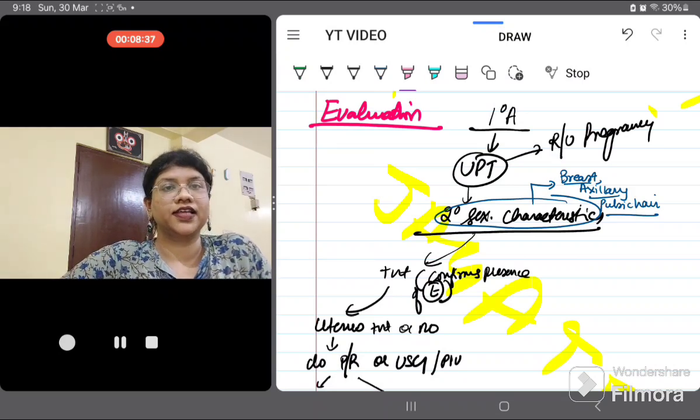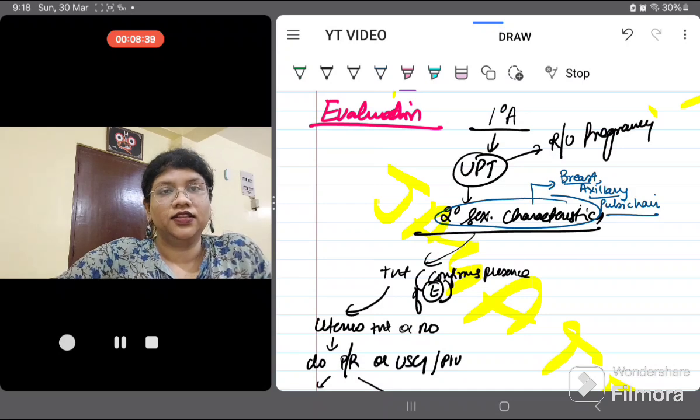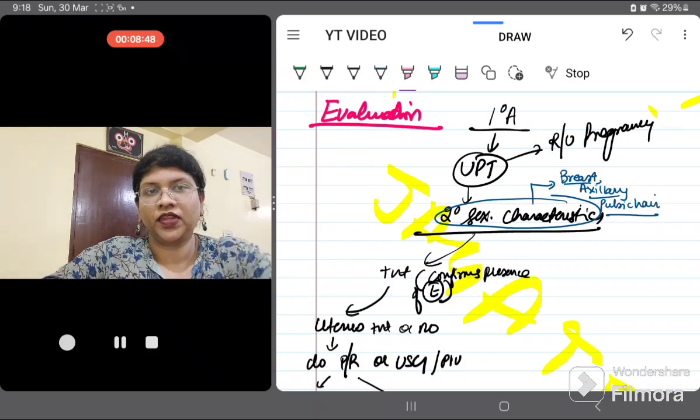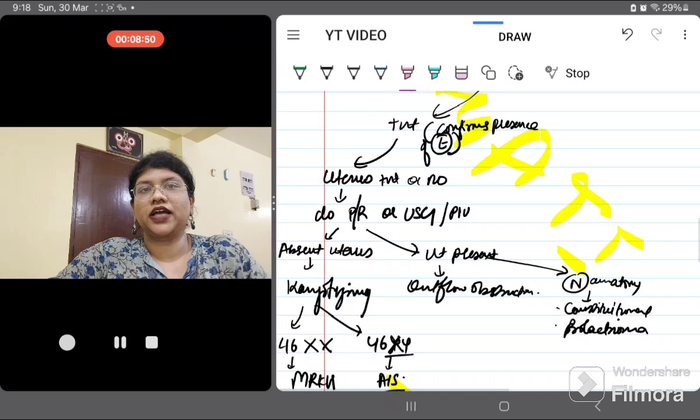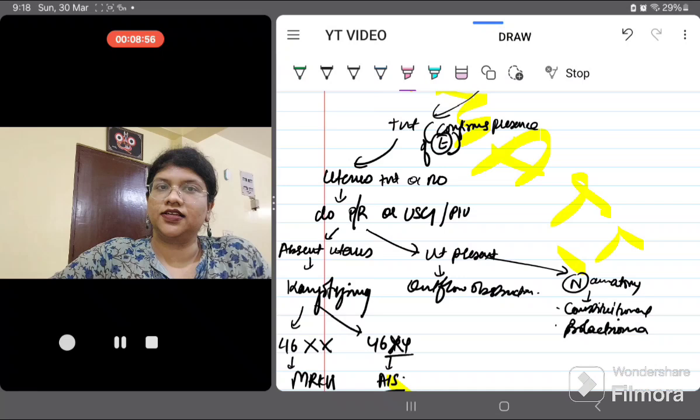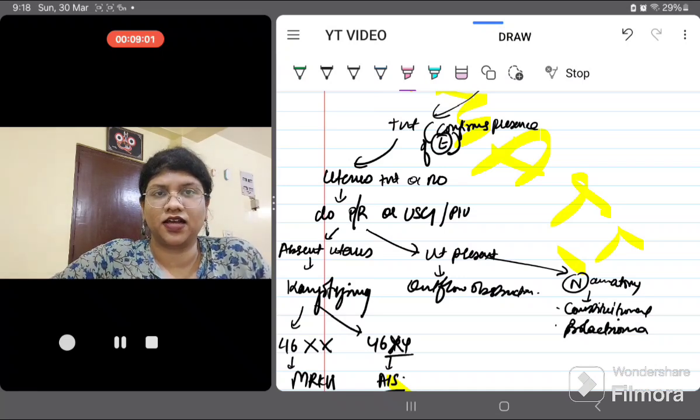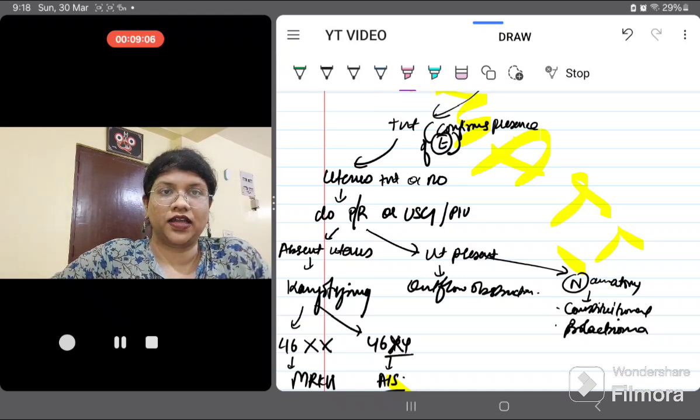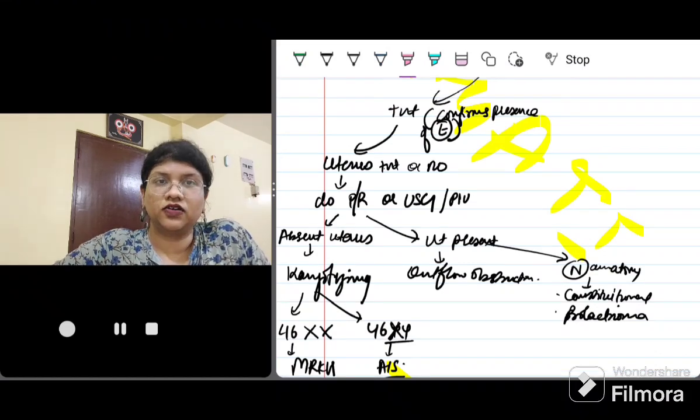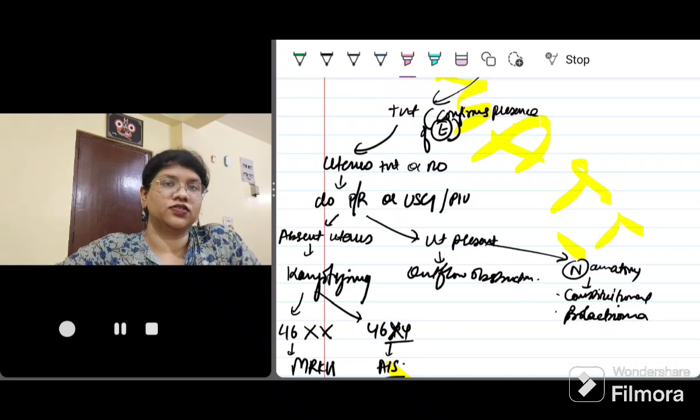Then next, after you have ruled out pregnancy, you will look for the secondary sexual characteristics. These include breast development, axillary hair and pubic hair. Suppose the secondary sexual characteristics are present. Now I want to see whether the uterus is present or not. I'm not going to do her PV examination. I'll preferably do an ultrasound. With per rectal ultrasound using imaging modality, I will look for the presence or absence of uterus.